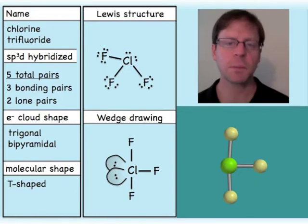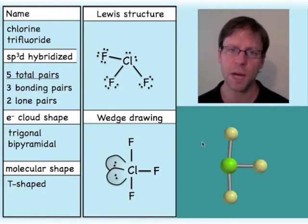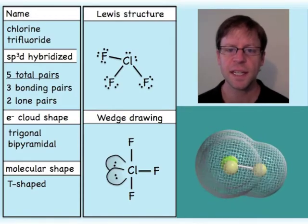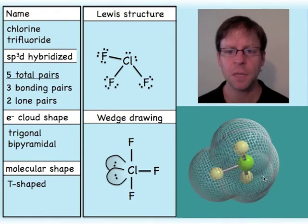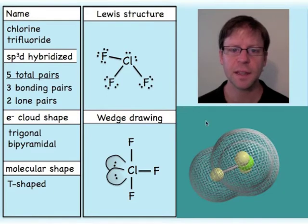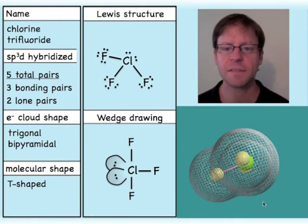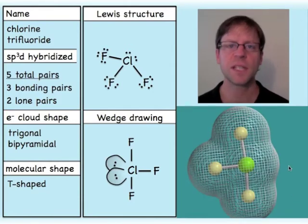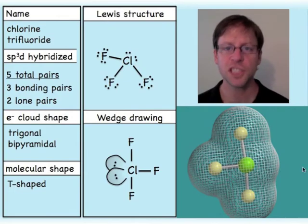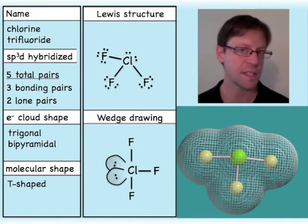I'll draw ClF3 with four things in the plane of the page and indicate a lone pair here and one going behind. Lone pairs actually hug pretty close to the central atom, so don't interpret the big puffy two-dot symbol as representing actual physical size. The electron cloud itself takes a trigonal bipyramidal shape, whereas the actual molecule with just the atoms is T-shaped.